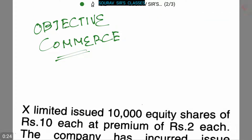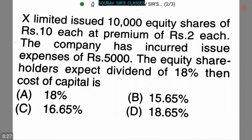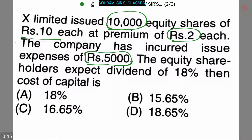Today our topic is Objective Commerce. Here is our first question: X Limited issued 10,000 equity shares of rupees 10 each at a premium of rupees 2 each. The company has incurred issue expenses of rupees 5,000. The equity shareholders expect a dividend of 18%, so the dividend is 18%. We have to find the cost of capital.